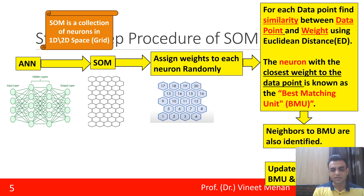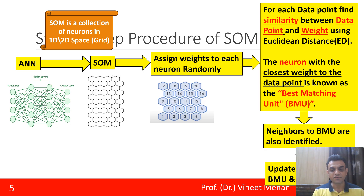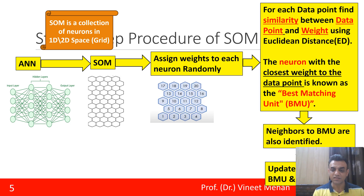The next step is to update the BMU and its neighbors — both are updated. Just like in artificial neural networks we keep on updating the biases and weights, similarly here the BMU and its neighbors are also updated. Updation means the updation of weights only.